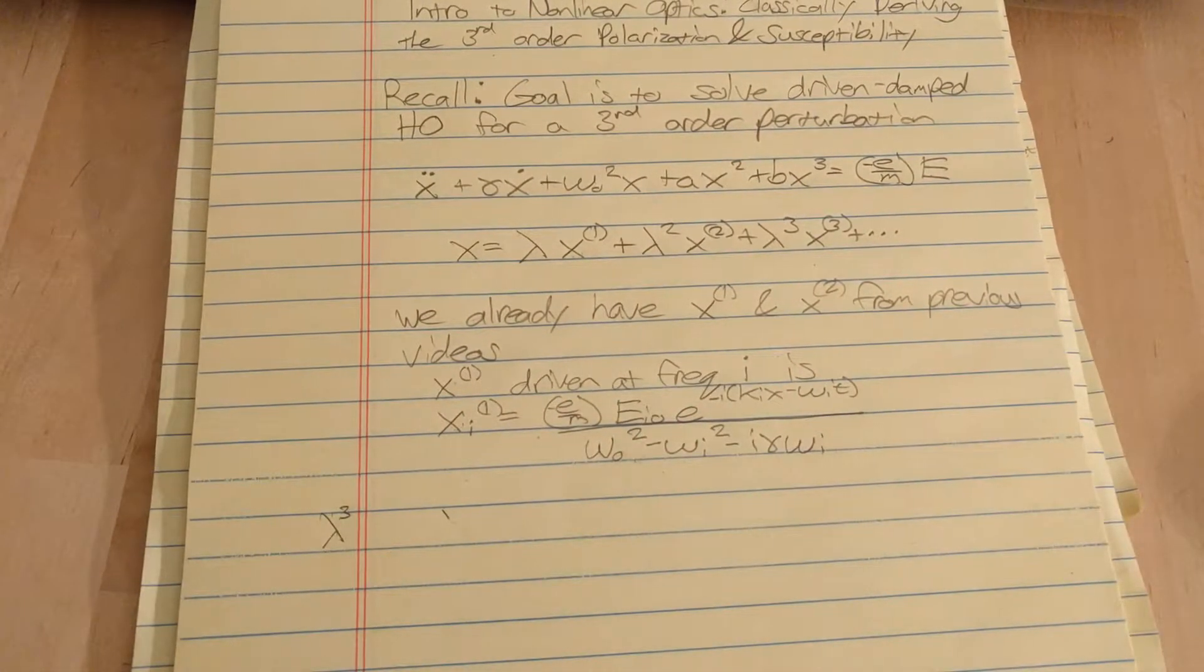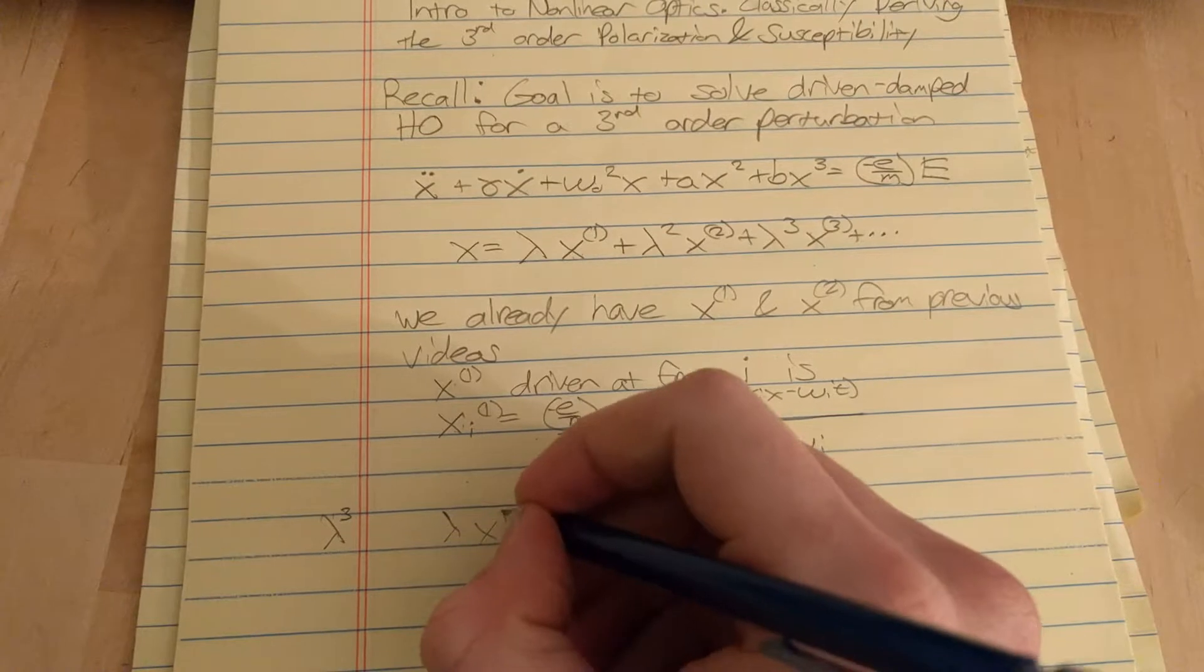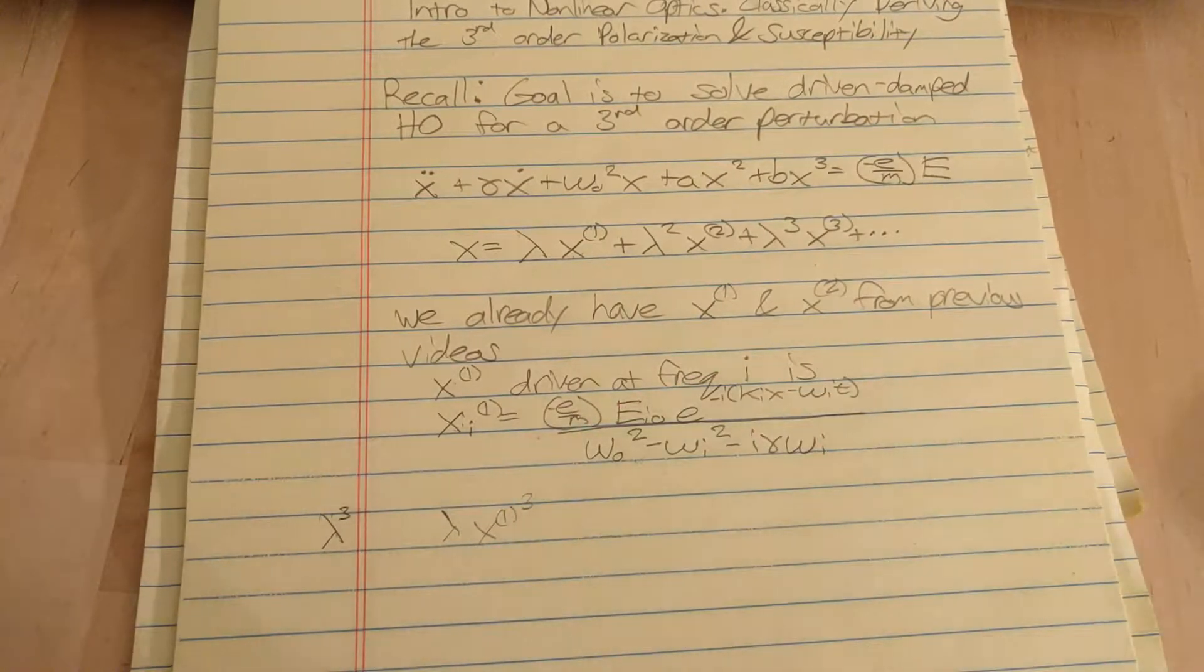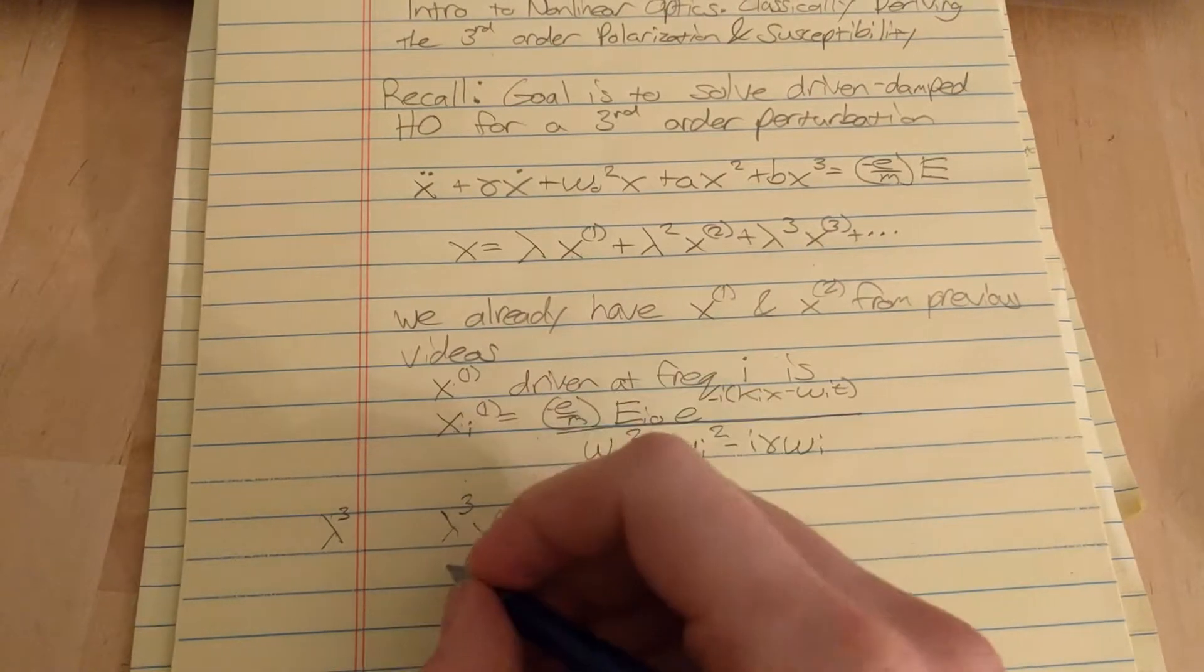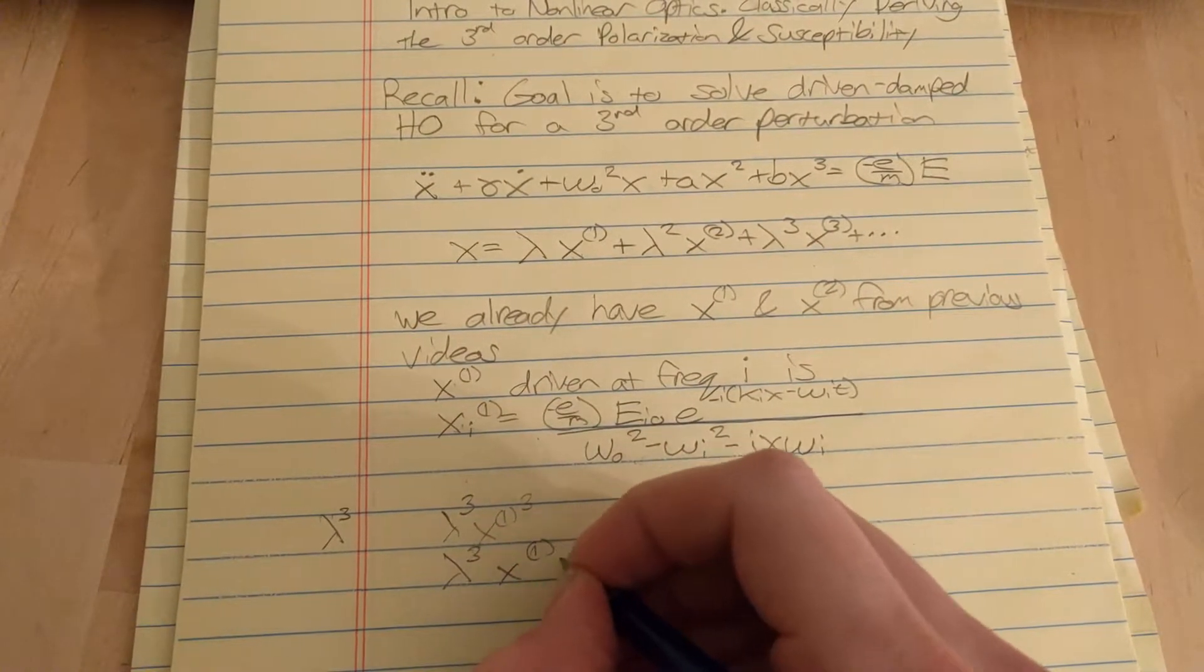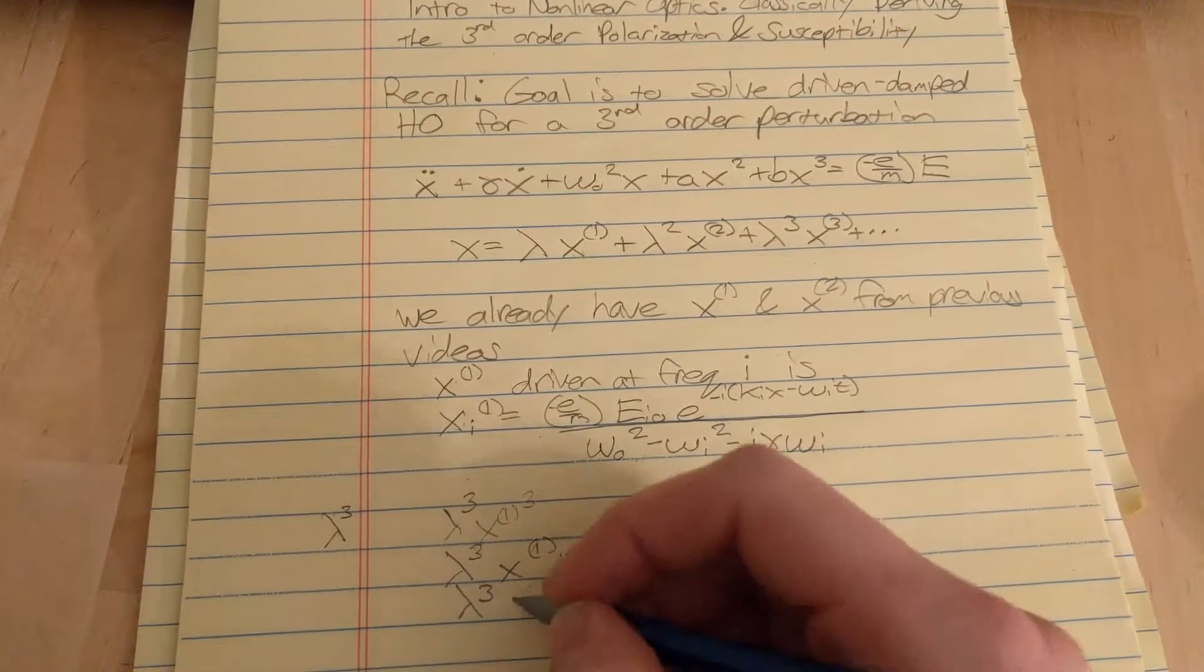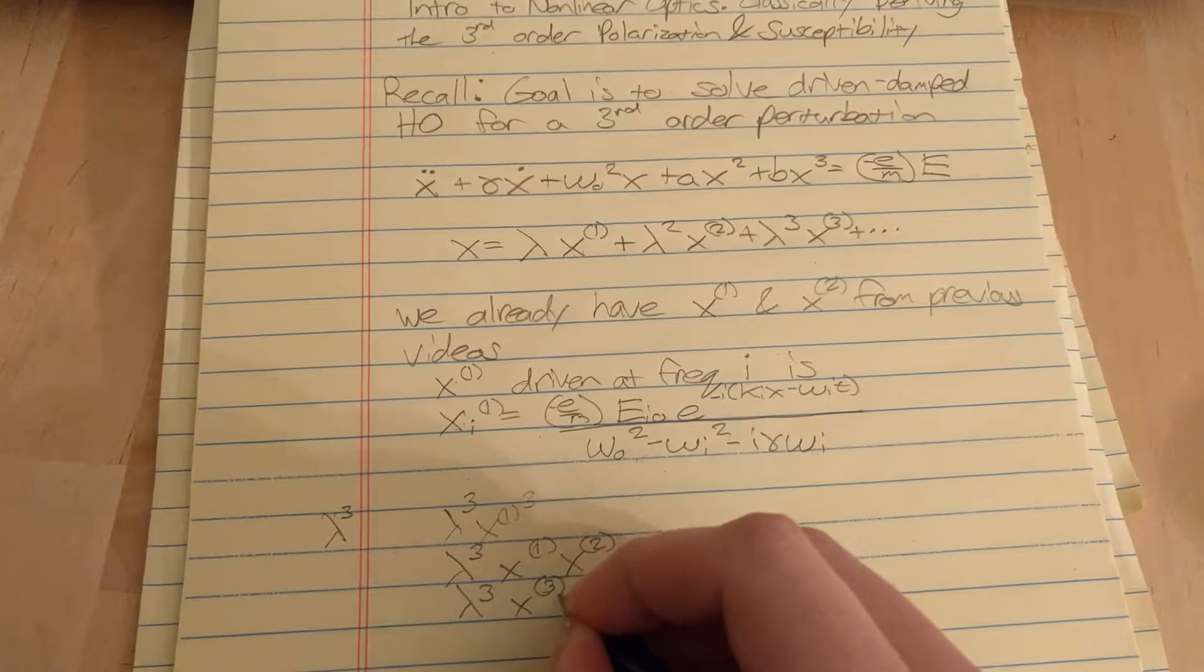lambda cubed times x1 cubed and you end up with a lambda cubed x1 x2 and a lambda cubed x3.